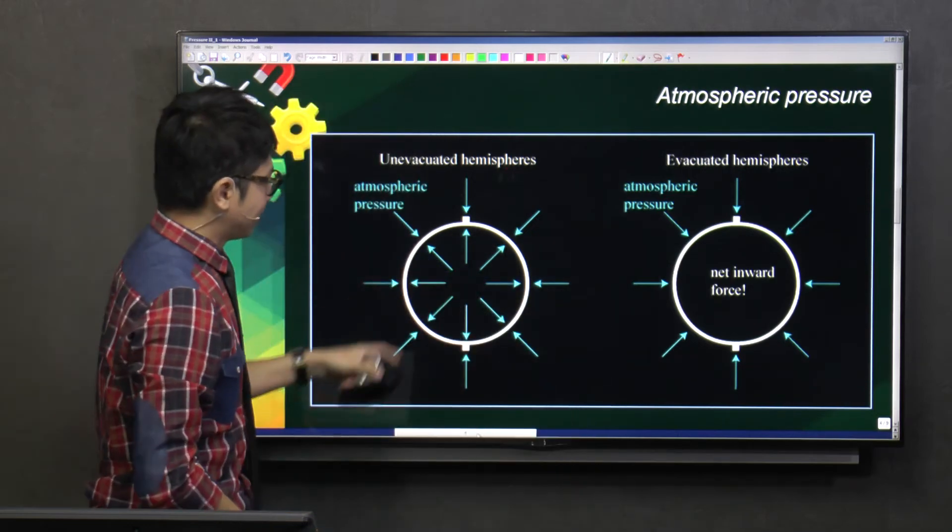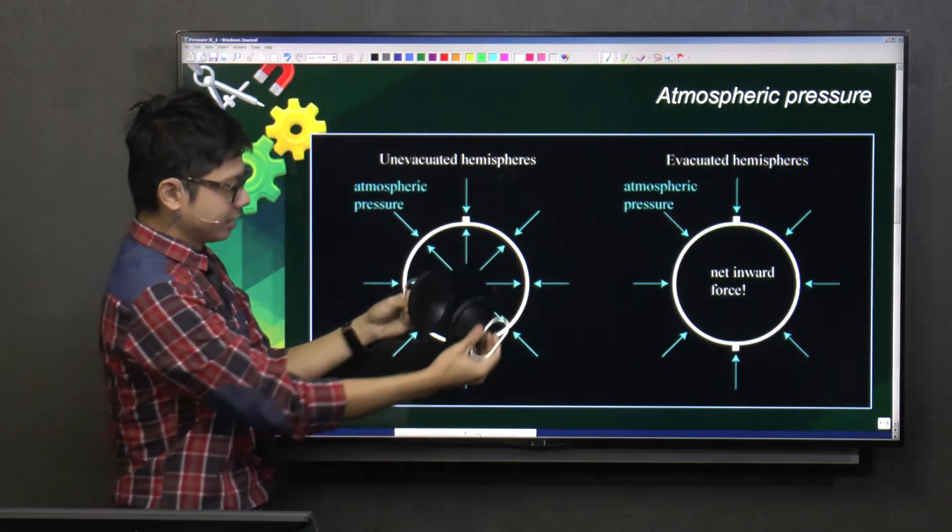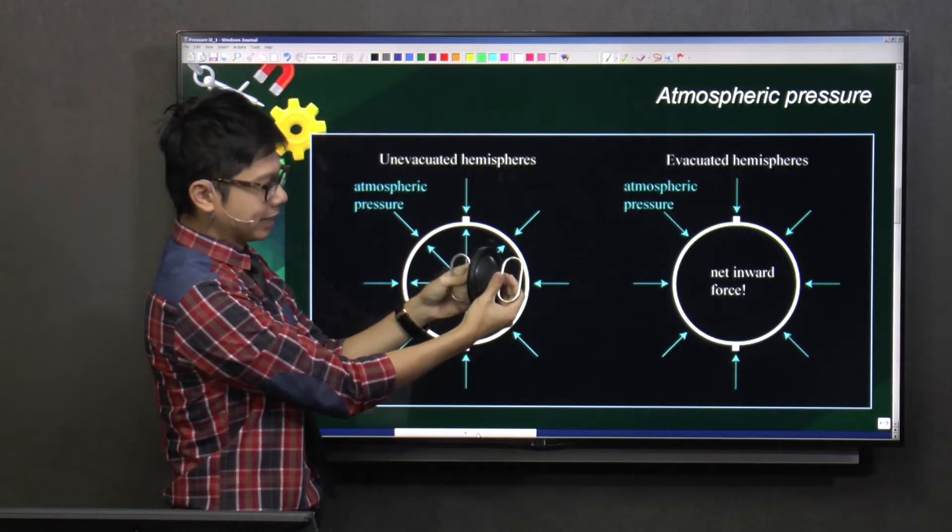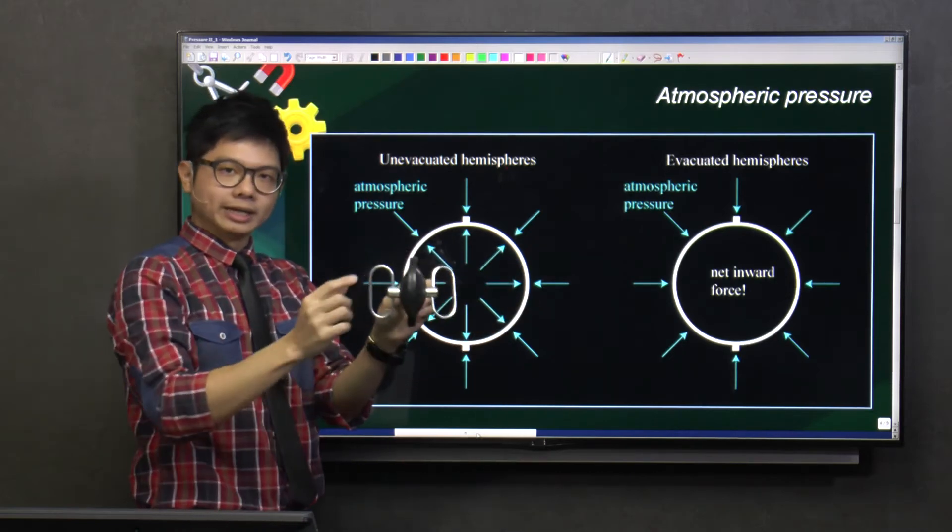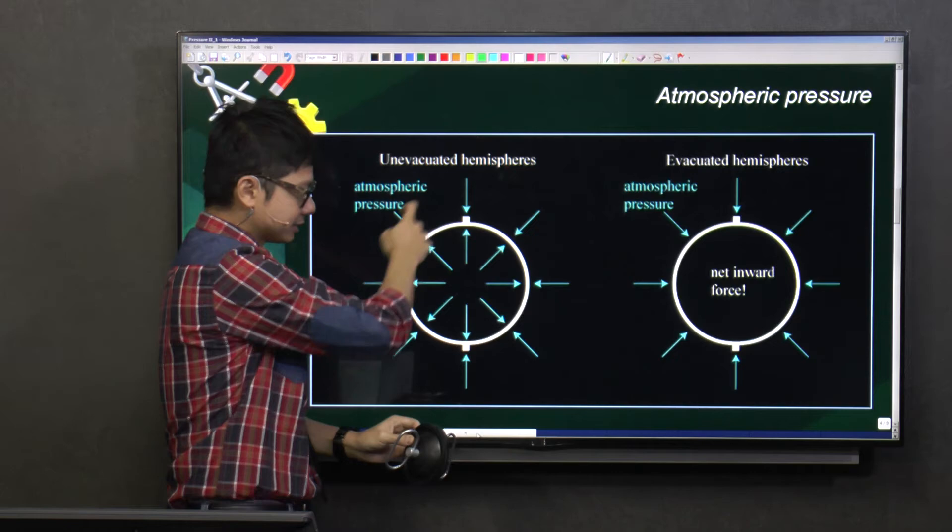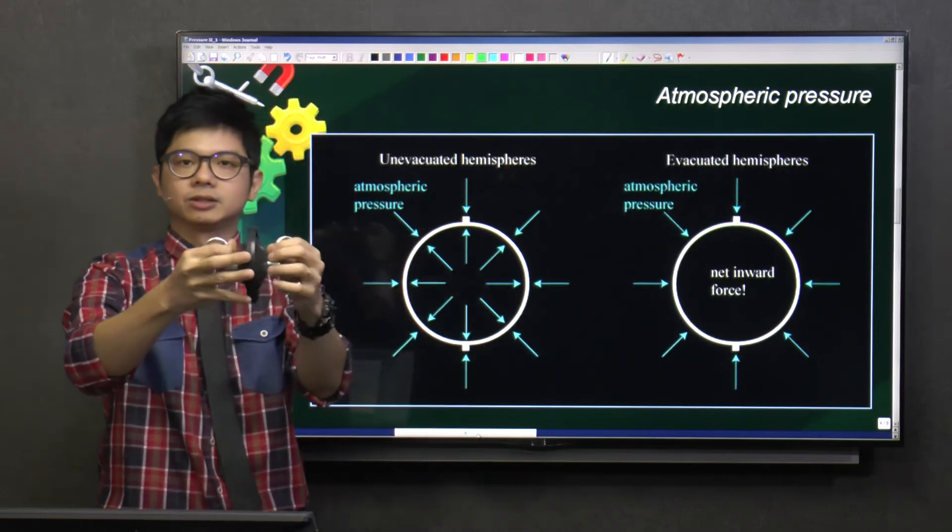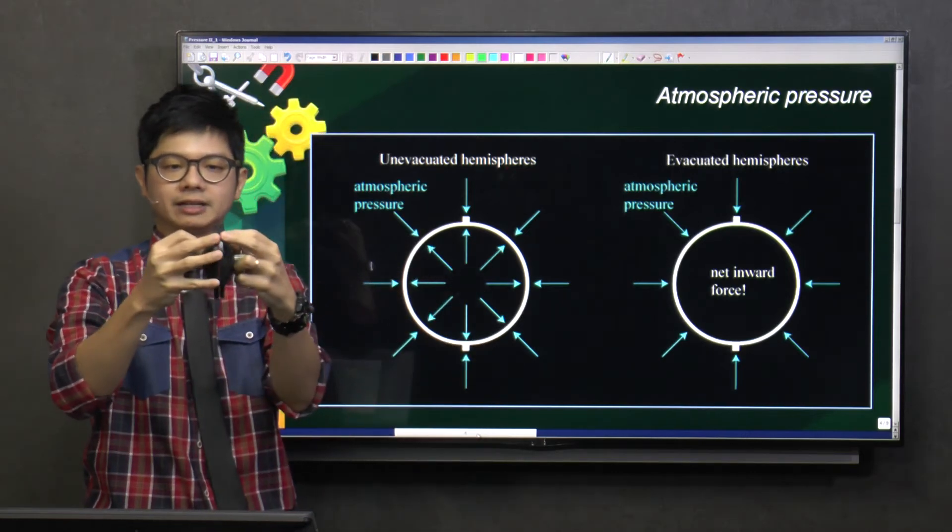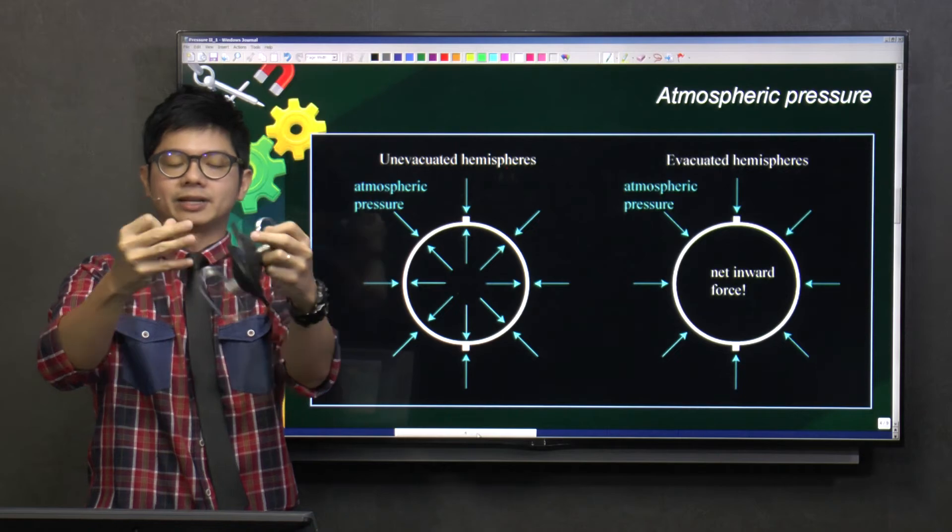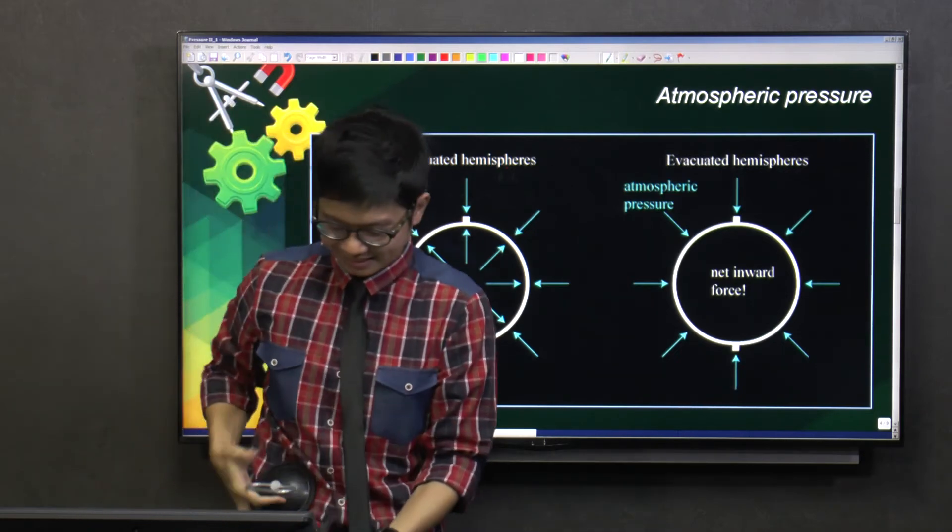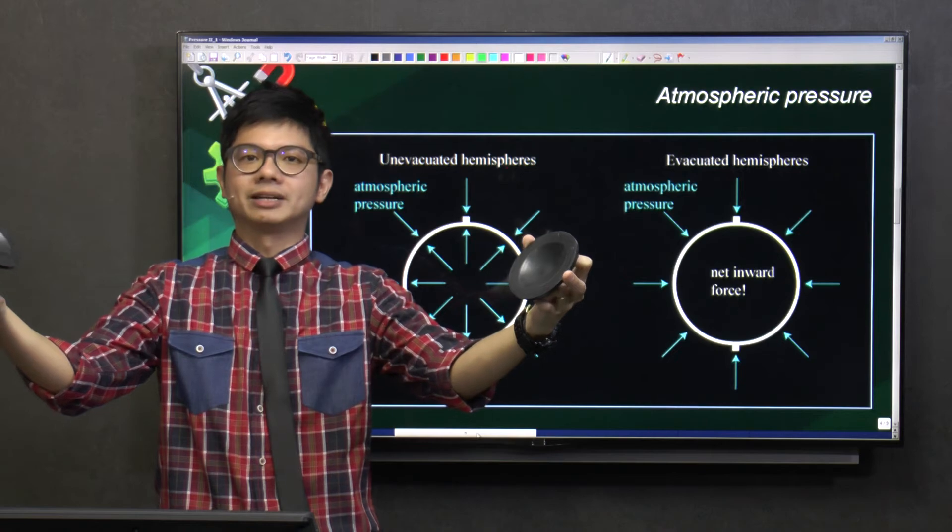So what do I mean by unevacuated hemisphere? It means that they are not squeezed together, just like that. So in this case, the pressure inside is the same as the pressure outside. You can just open it very easily. Can you see? Unevacuated means like that. You can just open it.